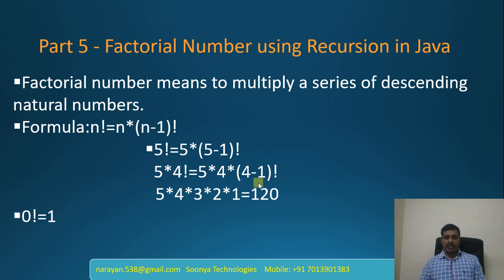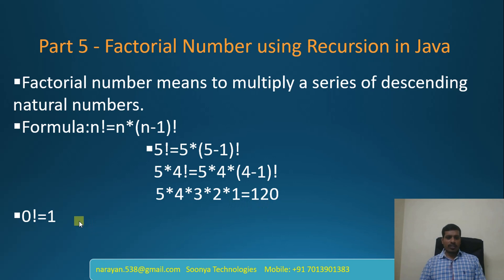Later we need to calculate 3 factorial, then 2 factorial, then 1 factorial, then 0 factorial. Finally, 5 factorial equals 5 into 4 into 3 into 2 into 1, which equals 120. The default value for 0 factorial is 1.